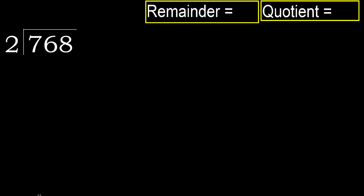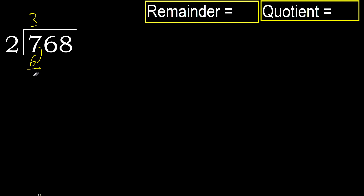768 divided by 2. Starting with 7: 7 is not less, so we work with 7. 2 multiplied by which number is nearest to 7 but not greater? 2 multiplied by 4 is 8 — 8 is greater. Multiplied by 3: 6 is not greater. So we subtract: 7 minus 6 is 1.